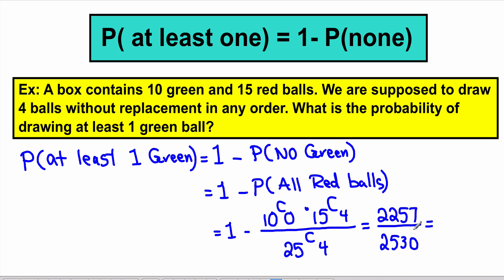Putting 2257 over 2530 into decimal gives 0.892. So the probability of getting at least one green ball when drawing four balls from 10 green and 15 red is 1 minus 0.892, which equals approximately 0.892 — wait, the final answer for at least one green is 0.892.